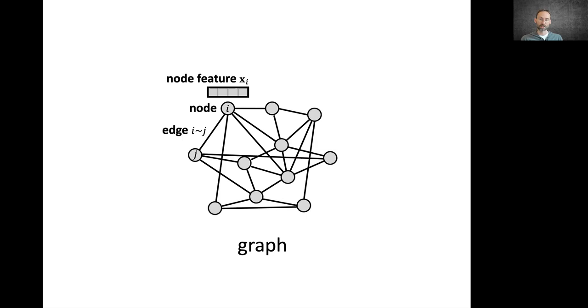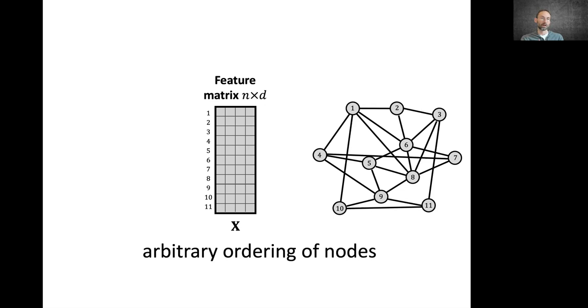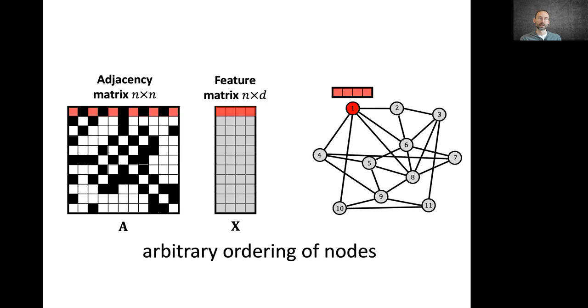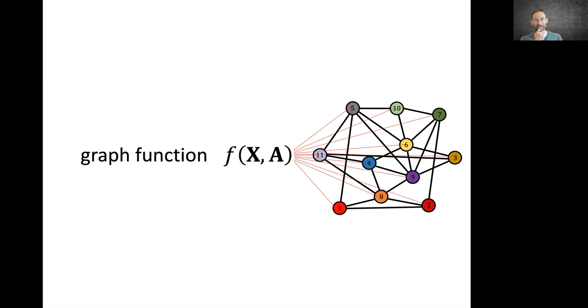One key structural characteristic of a graph is that we don't have a canonical way to order its nodes. Any ordering that allows us to represent the features as a matrix and the adjacency matrix as another matrix is defined up to the ordering of the nodes that can be arbitrary, and this can be represented as a permutation that is applied to the adjacency matrix and the feature matrix.